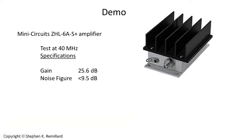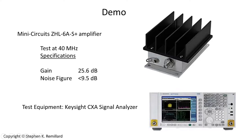I'll demonstrate using this equation with a model ZHL-6A amplifier from Mini-Circuits. I'll test it at 40 megahertz. The gain of this amplifier is specified at that frequency to be 25.6 decibels and the noise figure is promised to be less than 9.5 decibels. I'll do the measurement with a Keysight CXA signal analyzer spectrum analyzer. I realize that there are features in the CXA signal analyzer that I could be using this demo and I'm not because I want to keep this demonstration generic for users of other equipment.